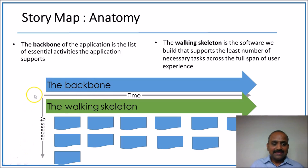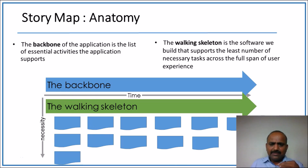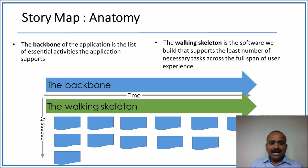The backbone is at the very top — without these features we can't deliver the product. The walking skeleton is the bare minimum necessary features required to support the backbone's listed features. Features that are highly optional are towards the bottom, while mandatory features are towards the top.